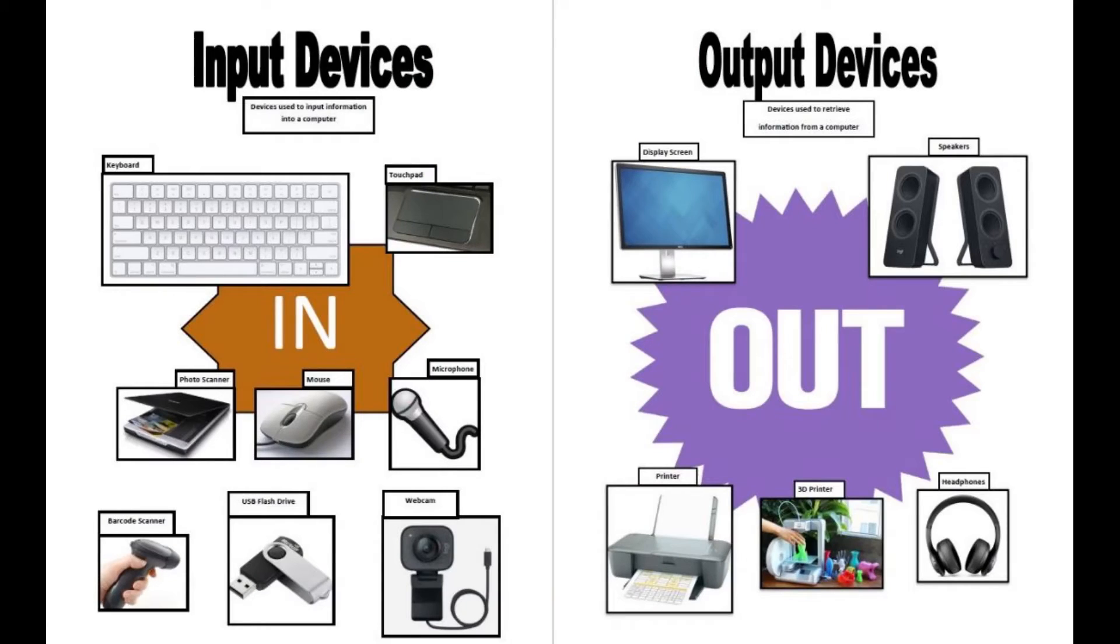Light Pen is a pointing device similar to a pen. It is used to select a displayed menu item or draw pictures on the monitor screen. It consists of a photo cell and an optical system placed in a small tube. When the tip of a light pen is moved over the monitor screen and the pen button is pressed, its photo cell sensing element detects the screen location and sends the corresponding signal to the CPU.